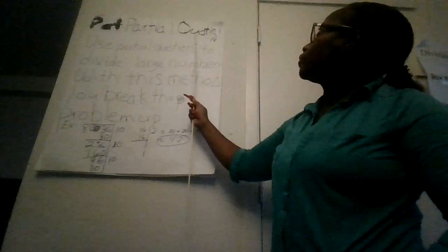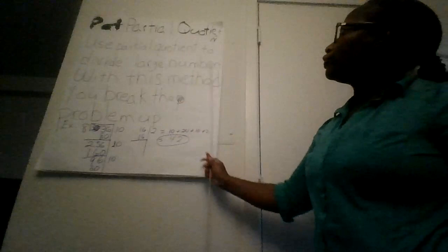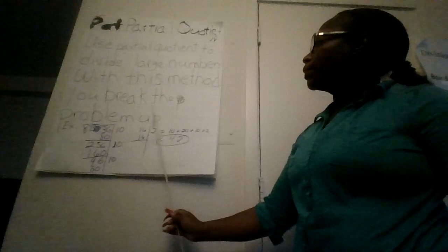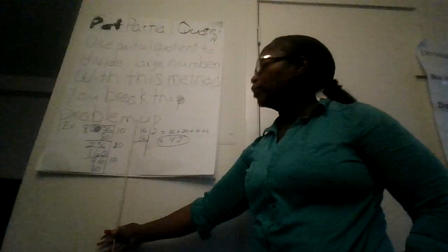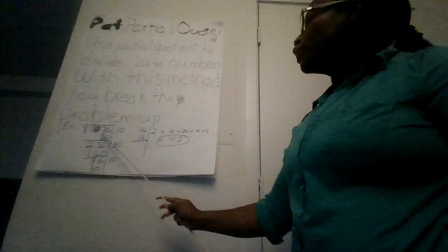The third strategy is the partial quotient method, which uses partial quotients to divide large numbers. With this method, you break down the problem in sequence, similar to long division, but with the numbers on the side. For example, 336 divided by 8.